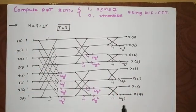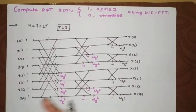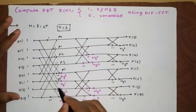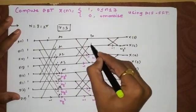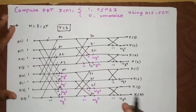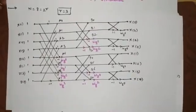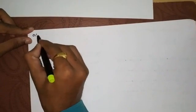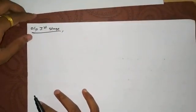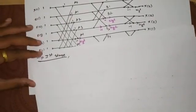Notice that in DIF-FFT the input is in normal order and the output is in bit-reversed order — this is the key difference from DIT-FFT. We will now write the output variables: A0, A1, A2, A3, A4, A5, A6, A7 for the first stage output, and B0, B1, B2, B3, B4, B5, B6, B7 for the second stage output.